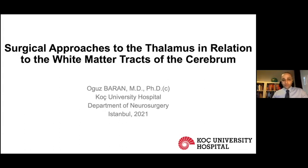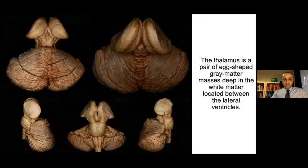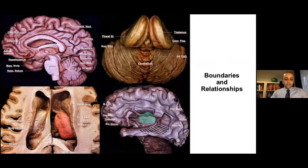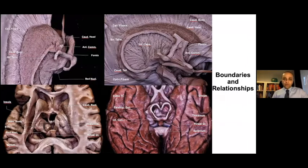Before talking about surgical approaches to the thalamus, I would like to discuss its boundaries briefly. The thalamus is a pair of egg-shaped gray matter masses deep in the white matter, located between the lateral ventricles medially and the internal capsule laterally. The massa intermedia interconnects both thalami through the third ventricle. The thalamus has different parts facing the body of the lateral ventricle, atrium, and temporal horn.